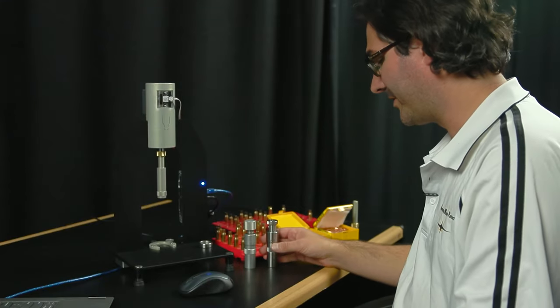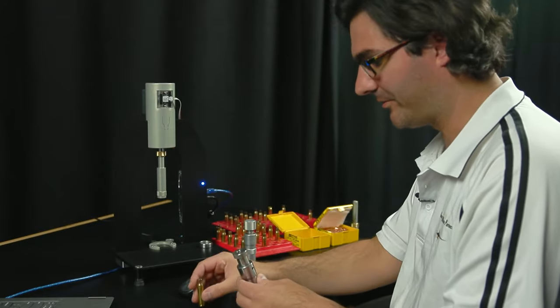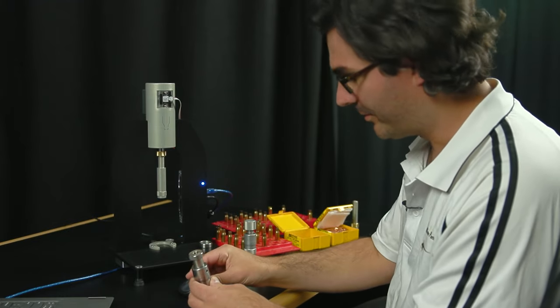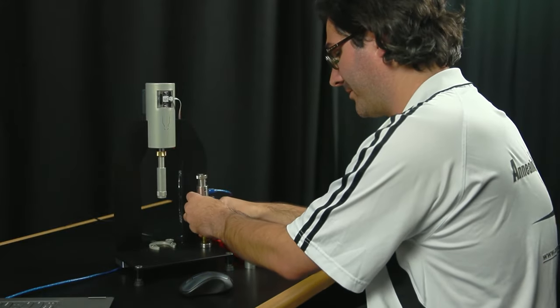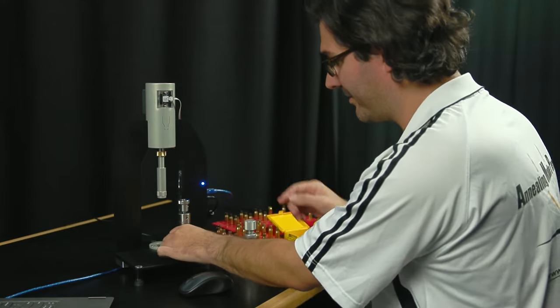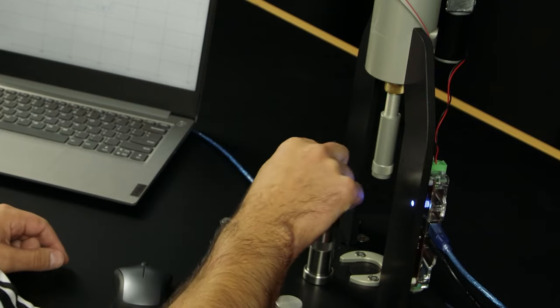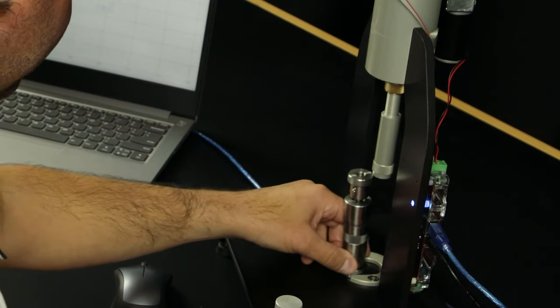Now we want to take our die and a case that we want to have a bullet seated into it with the bullet. We want to adjust the height of the RAM for this die and bullet combination. You can see that could be seated right now.